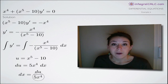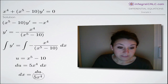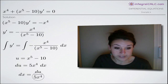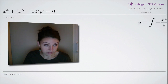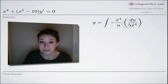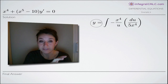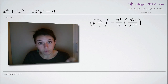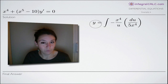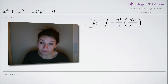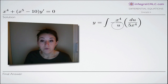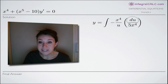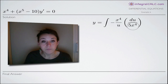Now that we've gone through u-substitution, we can substitute du over 5x to the 4th for dx and u for x to the 5th minus 10. We integrated the left side — the anti-derivative of y prime is y itself. On the right side, we plug in u in the denominator for x to the 5th minus 10, and we plug in du over 5x to the 4th for dx, making both of those substitutions.